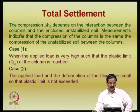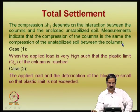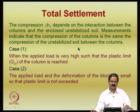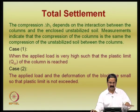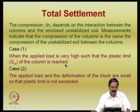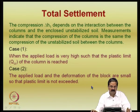The compression delta H1 depends on the interaction between the columns and the enclosed unstabilized soil. Measurements indicate that the compression of the columns is the same as the compression in the unstabilized soil between the columns — this is called strain compatibility. There are two cases: when the applied load is very high such that the plastic limit of the column is reached, and when the applied load is small so the plastic limit is not exceeded.